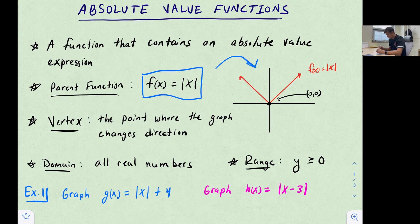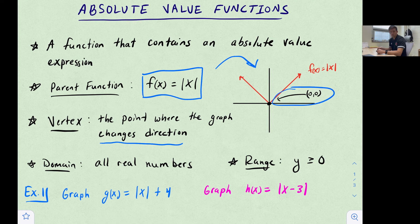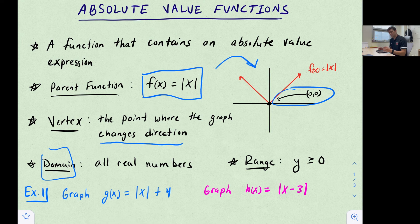Just like we had a parent function with linear functions, we also have one with absolute value functions. An important thing to note is that there's a point called a vertex — the point where the graph changes direction. On the parent function, f(x) = |x|, the vertex is located at the origin. You can use the vertex as a reference point to see transformations. The domain is all real numbers, since both sides of the V extend left and right forever.